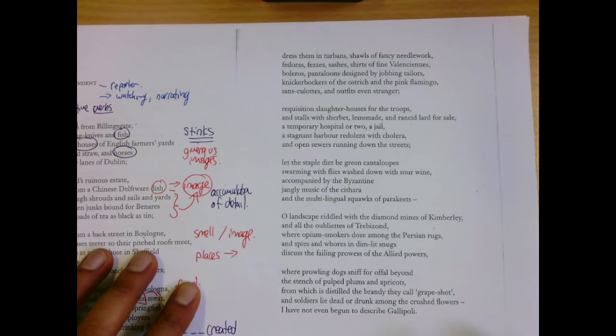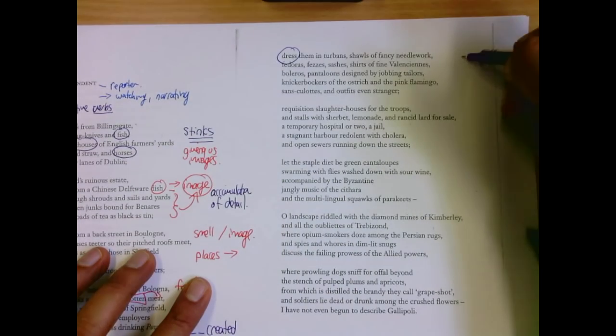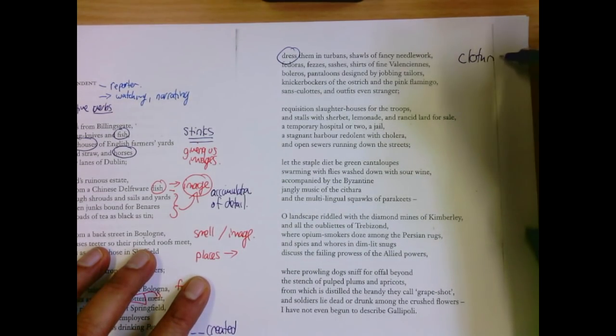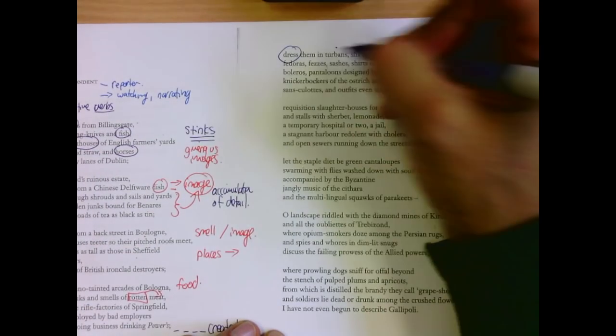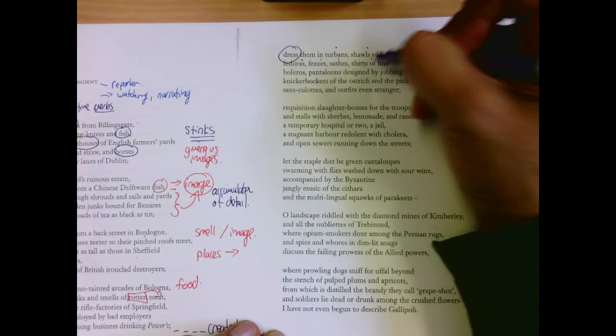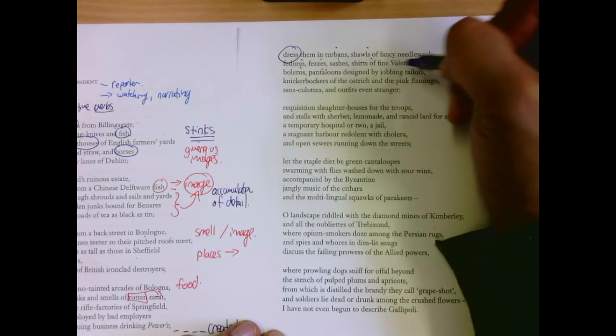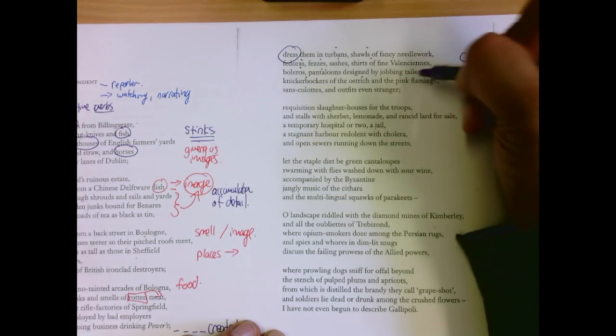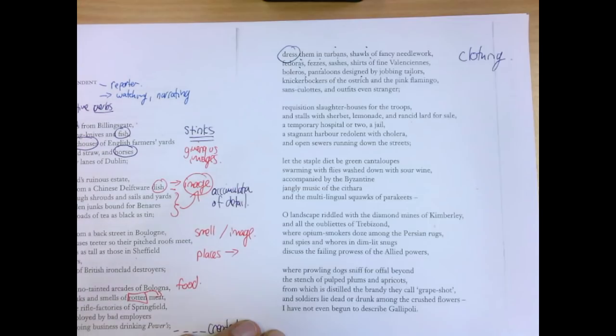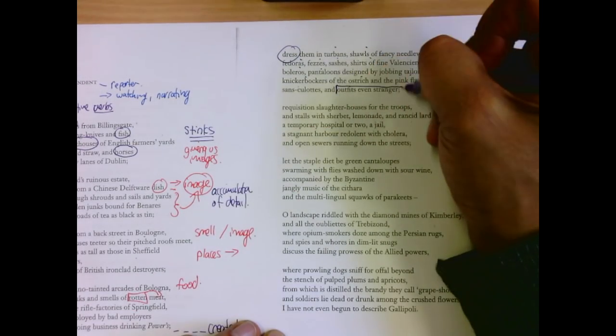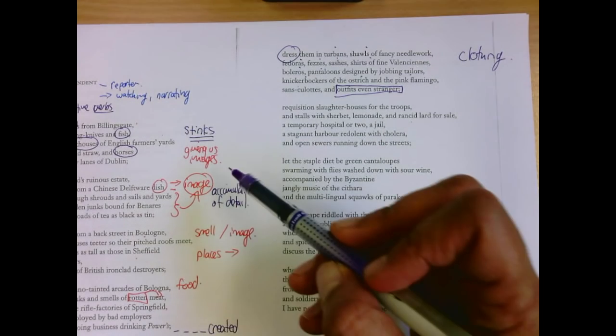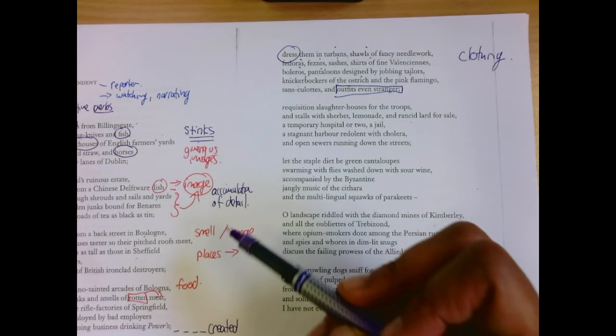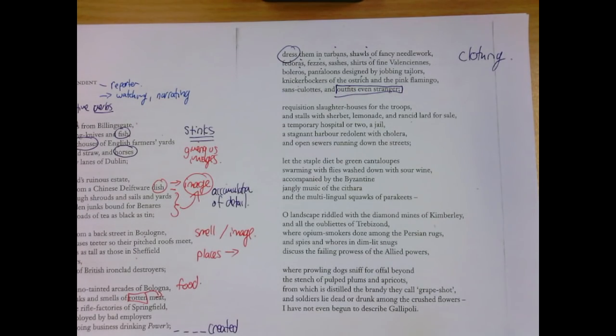And then what I want you to do is clothing. Dress them now. Dress them in turbans, shawls, fedoras, fezzes, sashes, shirts, boleros, pantaloons, knickerbockers, ostriches and pink flamingo, outfits even stranger. So we've got smells, we've got food, we've got places, we've got things. Now we have people, we have clothing.